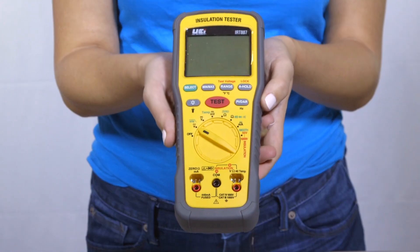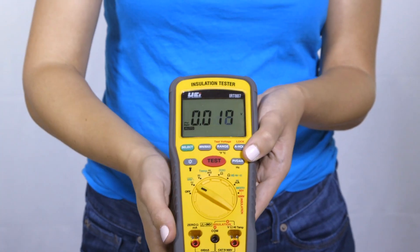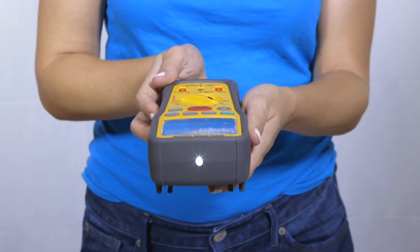It also includes remote probe, auto power off, backlight, work light, and a one-year limited warranty.